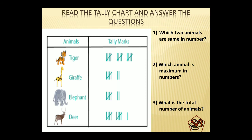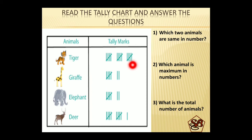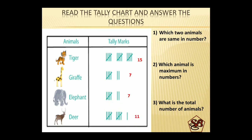Reading the tally charts and answering the questions. Here a tally chart has been given to us of various animals — tiger, giraffe, elephant, and deer — and here are some questions corresponding to it. We have to look into the tally chart and give the answers accordingly. But before doing so, we will convert these tally marks into numbers. 5 plus 5 plus 5 gives us 15. 5 plus 2 gives us 7. 5 plus 5 plus 5 plus 5 plus 1 gives us 11. Now we have these numbers and we will answer these questions.